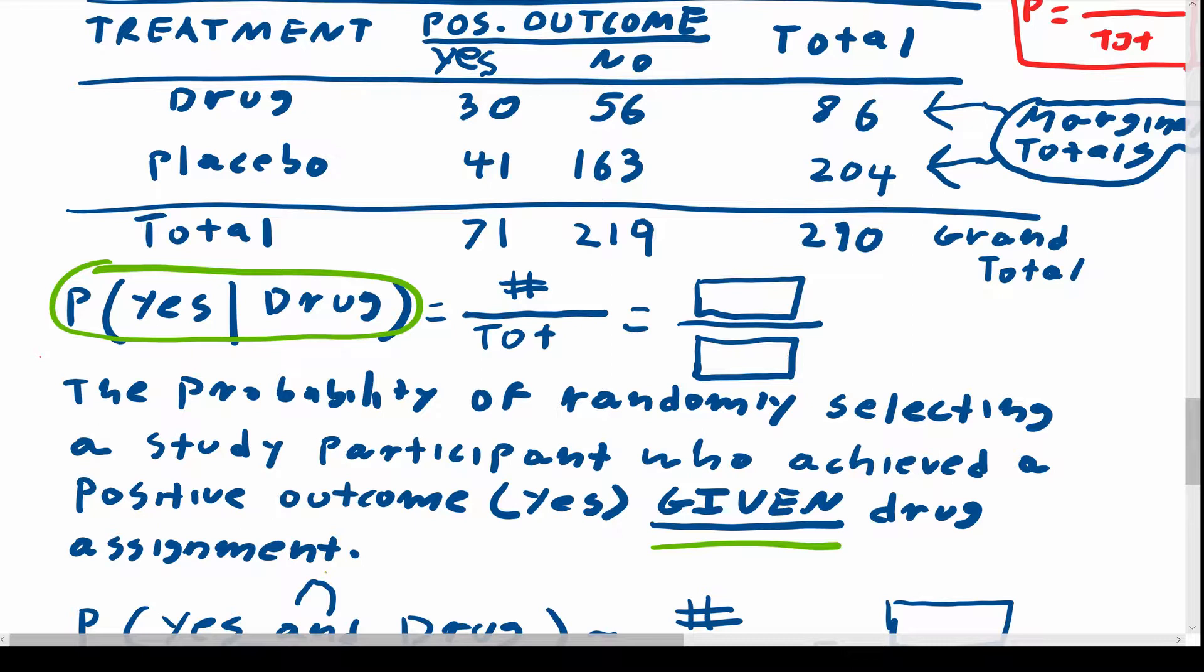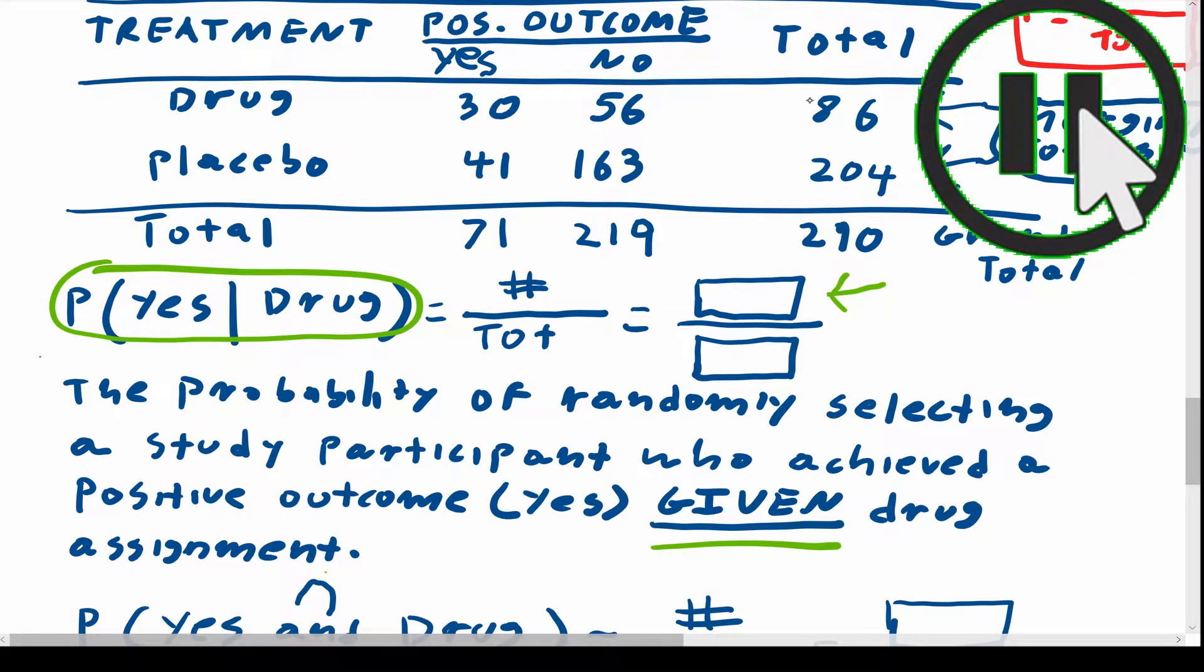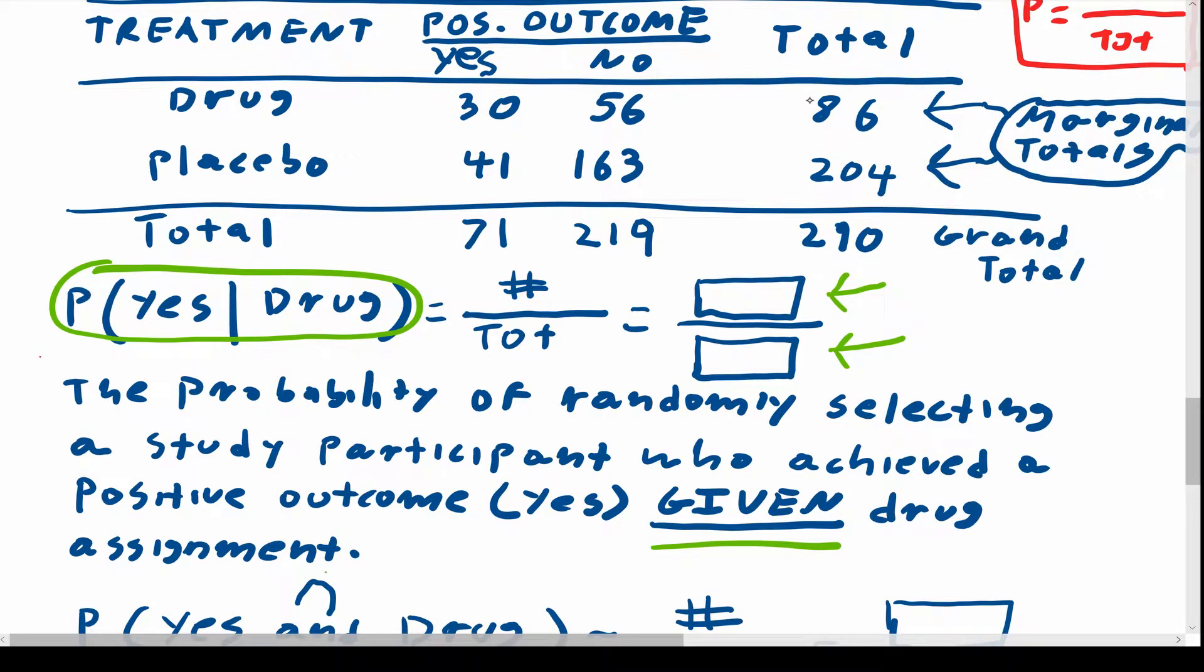So pause the video for a second and see if you can figure out what to put in for the numerator and what to put in for the denominator. Okay, so now let's think about this. A probability is a total in the denominator and some number in the numerator. So what would the total be? Well, when it says given drug assignment, it says we know that the study participants were randomly assigned the drug. And there were a total of 86 participants who were randomly assigned the drug. And out of these 86 participants, 30 achieved a positive outcome. It's really that simple.